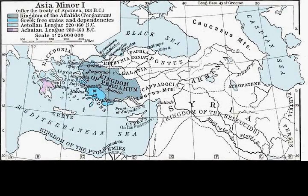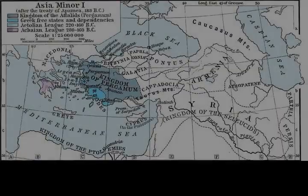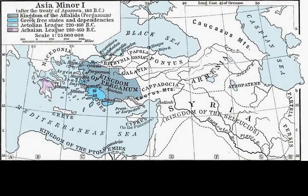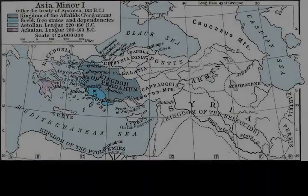Antiochus criticized the Romans for meddling in the affairs of Asia Minor states, whose rights were traditionally defended by Rhodes. In late winter 196–195 BC, Rome's erstwhile chief enemy, Carthaginian general Hannibal, fled from Carthage to Antiochus' court in Ephesus. Despite the emergence of a pro-war party led by Scipio Africanus, the Roman senate exercised restraint. The Seleucids expanded their holdings in Thrace from Perinthus to Maroneia at the expense of Thracian tribesmen.